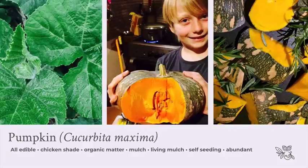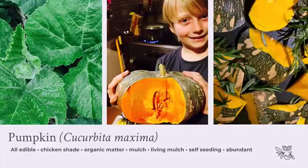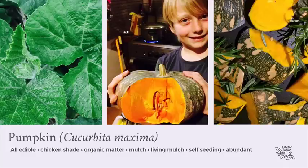Every single part of the pumpkin is edible. When I first discovered this I was absolutely blown away, because typically you wait for that beautiful orange-fleshed pumpkin and ignore the rest. When I discovered that pumpkin leaves were edible, it was ground-shattering — there was an enormous abundance of food available for a much longer period. I eat pumpkin leaves as one of my main leafy greens every day while the plants are sprawling. I snip off the ends, which keeps the vine in check while providing an abundance of food. I lightly steam them, which gets rid of the fluffy texture.